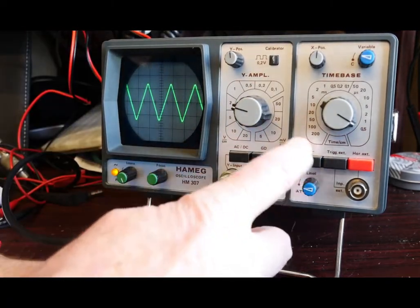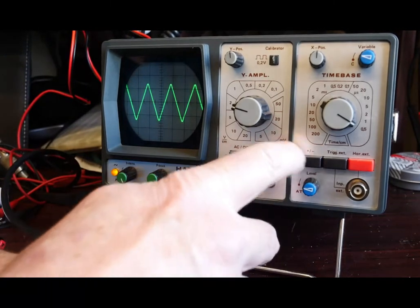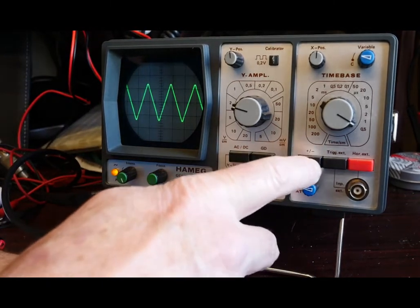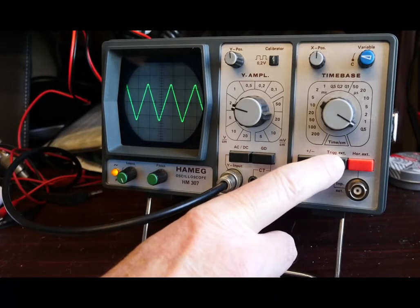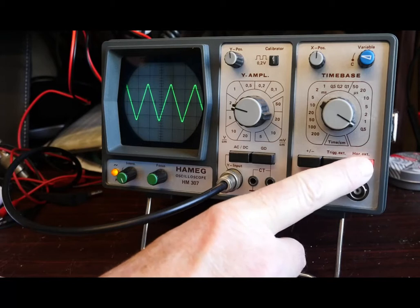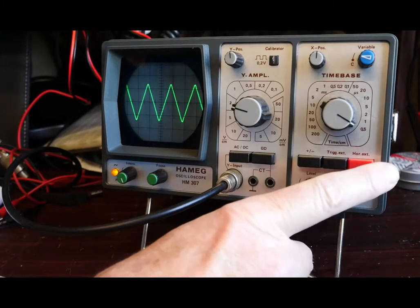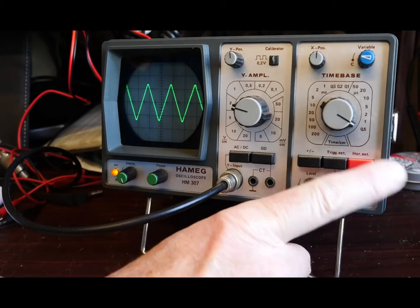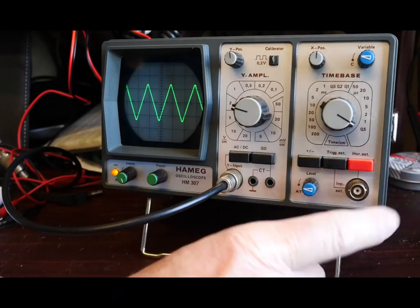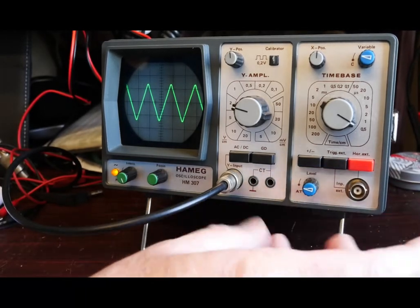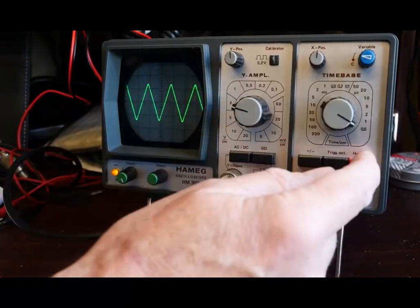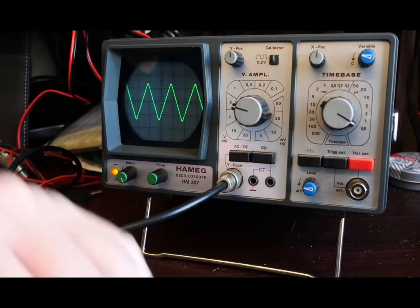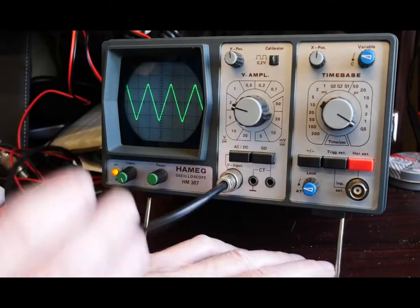Down here, this allows us to reverse the polarity of display, plus or minus. We've got an option to have an external trigger. This allows us to enable XY mode. So if you want to display some Lissajous patterns, we can feed X and Y in, enable that, and we can get the scope to display in that mode.